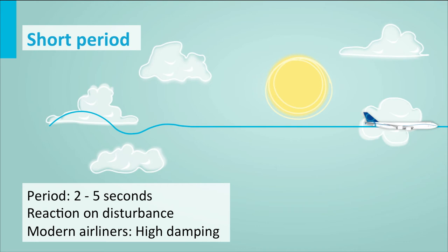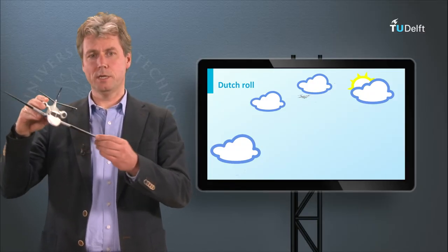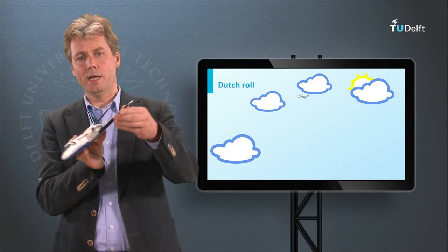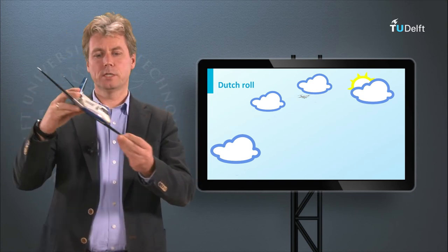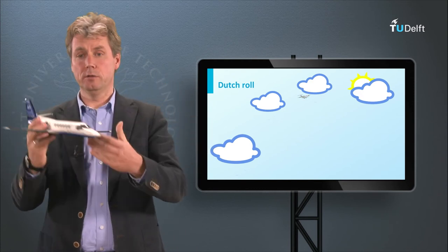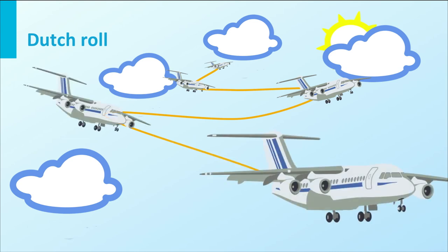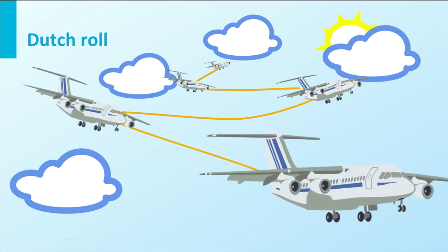Laterally there are different movements. One that you would regard as the fugoid for asymmetrical movements is the Dutch roll, which is basically like a swing or pendulum where the aircraft oscillates gently and is not very well damped. We have a picture of it here showing really large excitations and not very well damped motion.